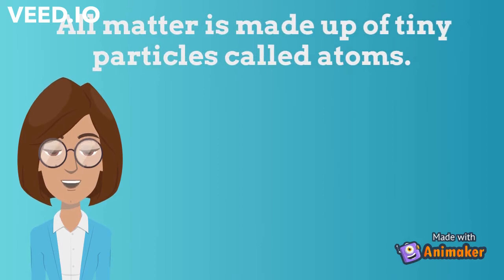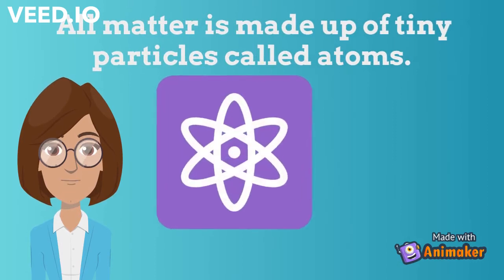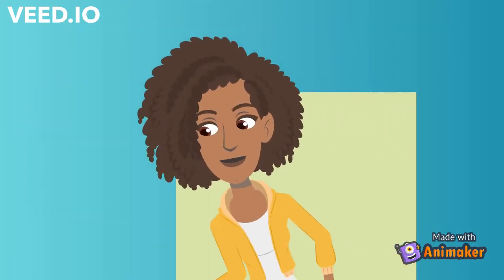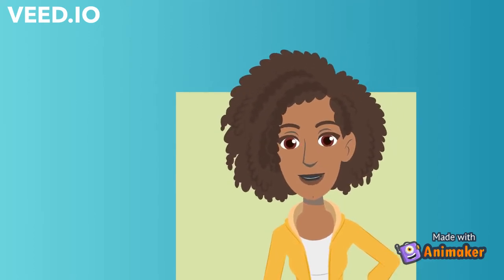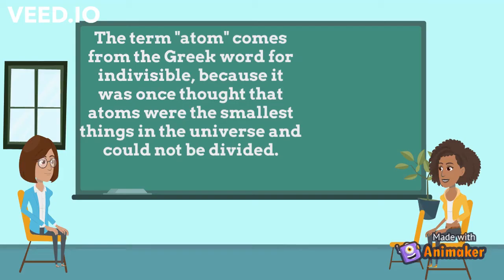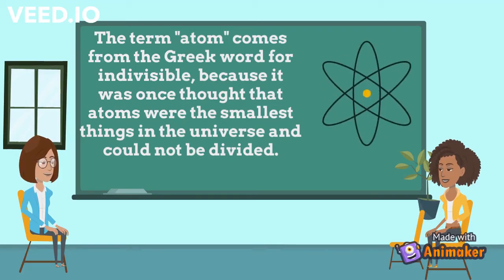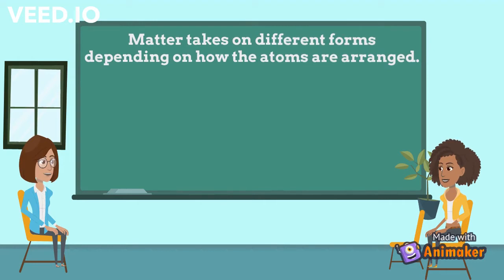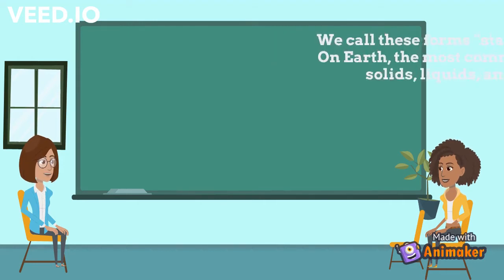All matter is made up of tiny particles called atoms. So it means everything is made up of atoms, including me. Wow, I have never thought like that! The term atom comes from the Greek word for indivisible, because it was once thought that atoms were the smallest things in the universe and could not be divided. We now know that each atom is generally made up of smaller particles.